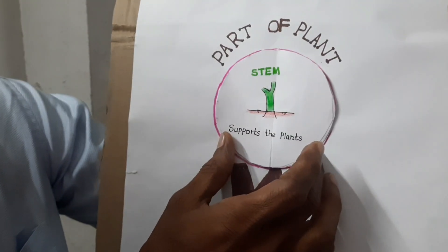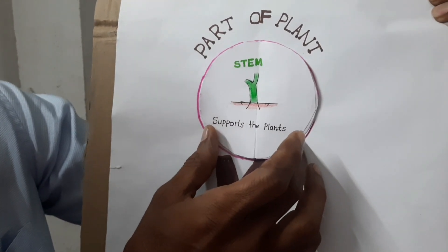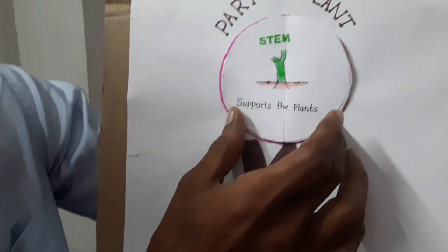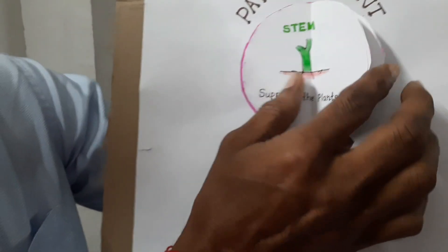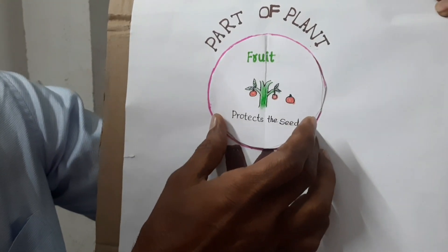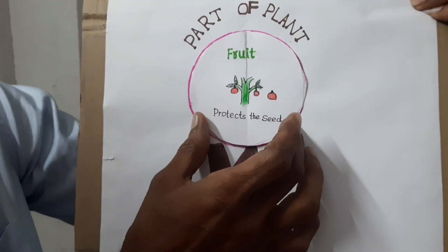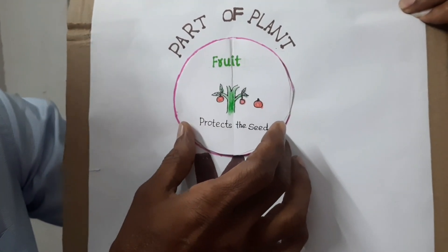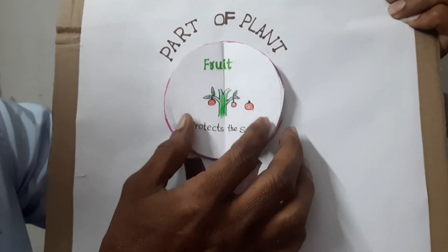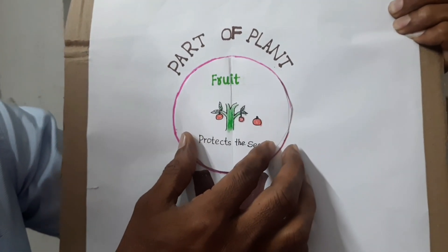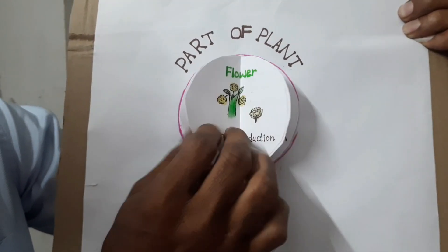The stem supports the plant. The fruit protects the seed. Germination is important to the seed.